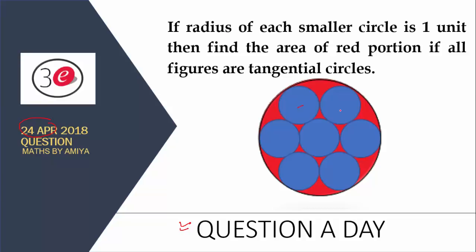If the radius of each smaller circle is one unit and all figures are tangential circles, then we need to find the area of the red shaded region. This is your question and you have 24 hours time. Try to solve this question.